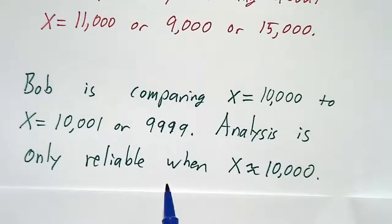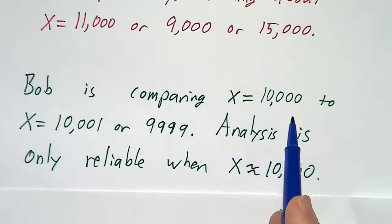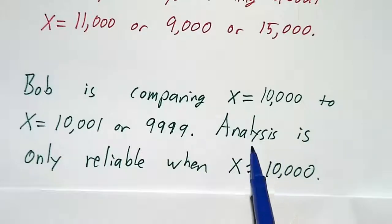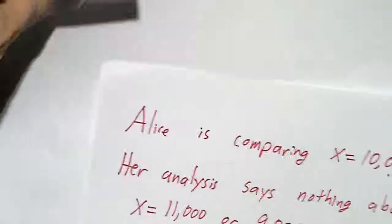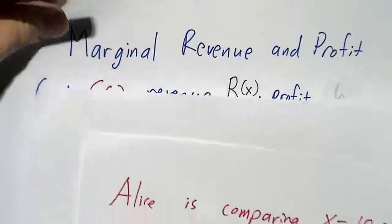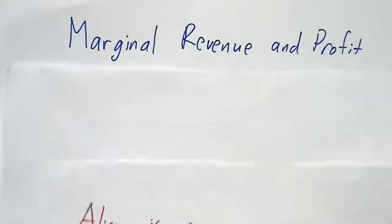So whenever you're interested in small changes, you want to look at marginal costs, and marginal profit, and marginal revenue. Whenever you're thinking about big changes, then maybe you should think about average cost. Okay. Now, we can also talk about marginal revenue and marginal profit.